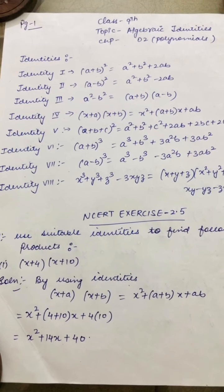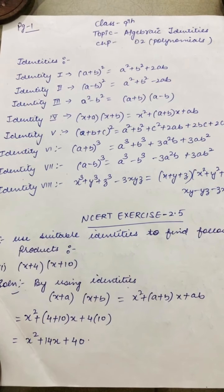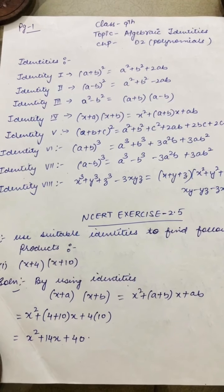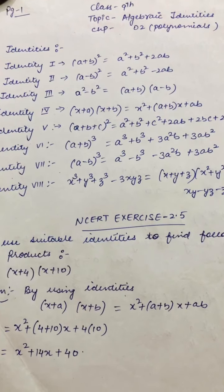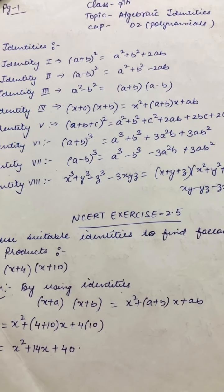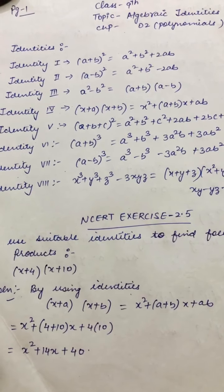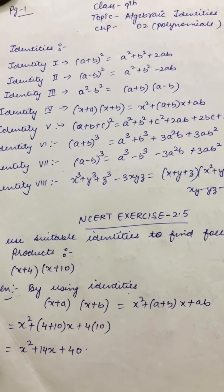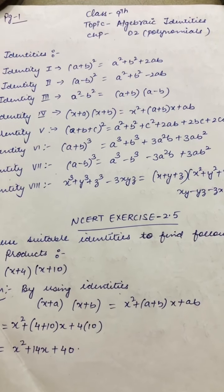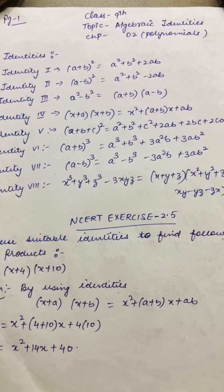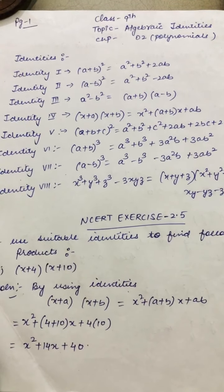Identity number 6: (a+b)³, not a+b3, (a+b) whole cube, which is a³ + b³ + 3a²b + 3ab². Identity number 7: (a-b)³ = a³ - b³ - 3a²b + 3ab².